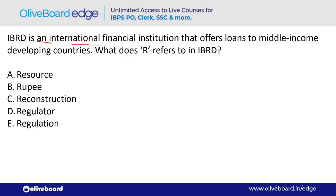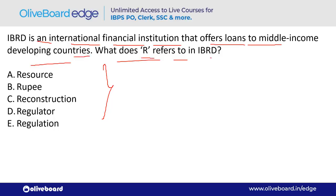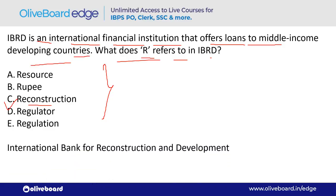IBRD is an international financial institution that offers loans to middle-income developing countries. What does 'R' refer to in IBRD? IBRD stands for International Bank for Reconstruction and Development — option C. This is an arm of the World Bank.